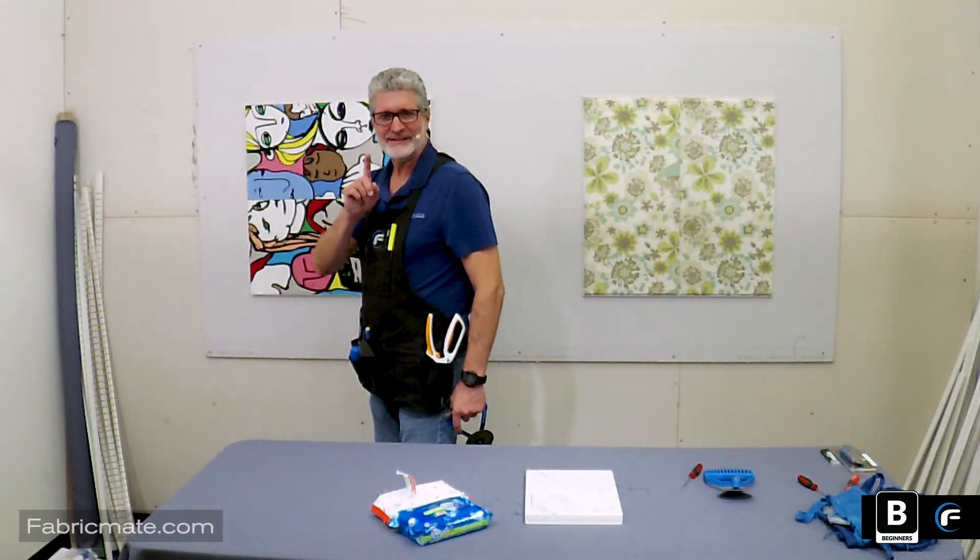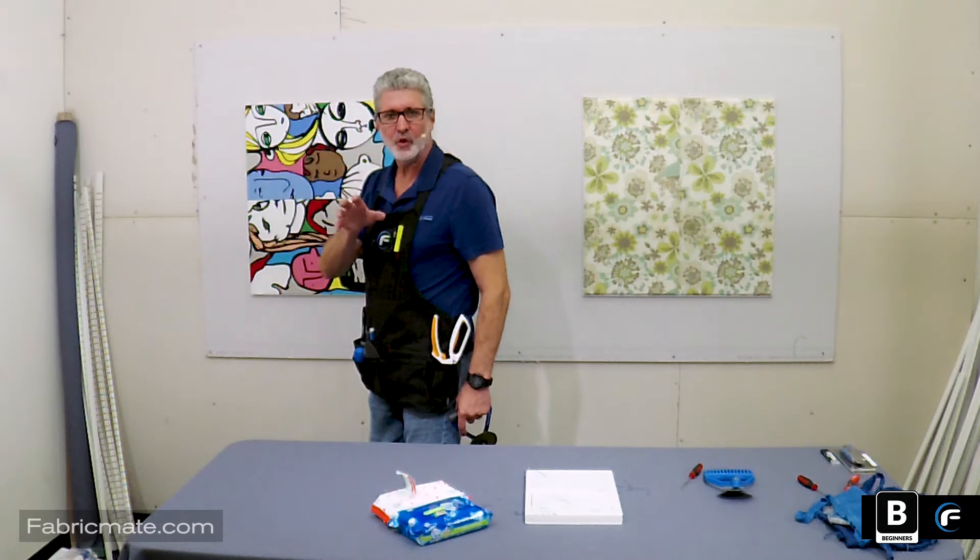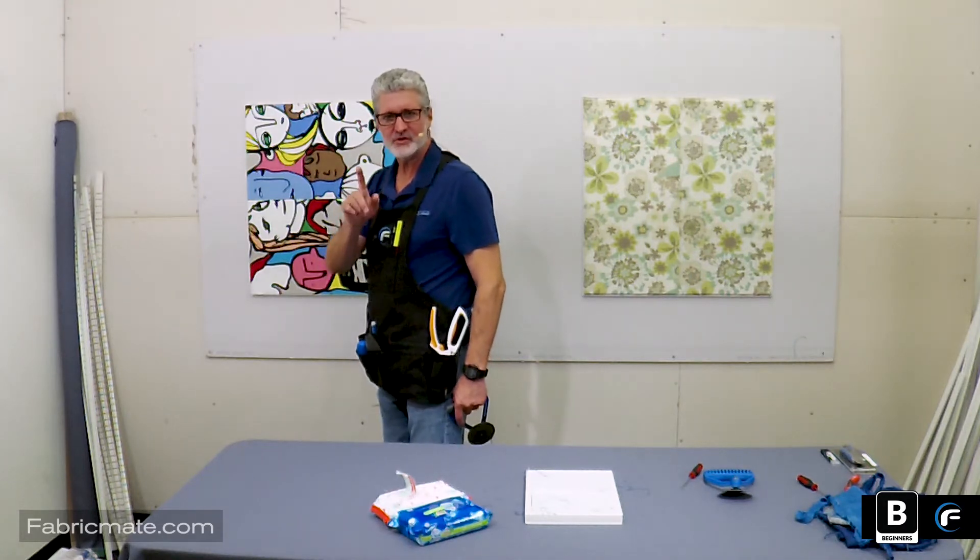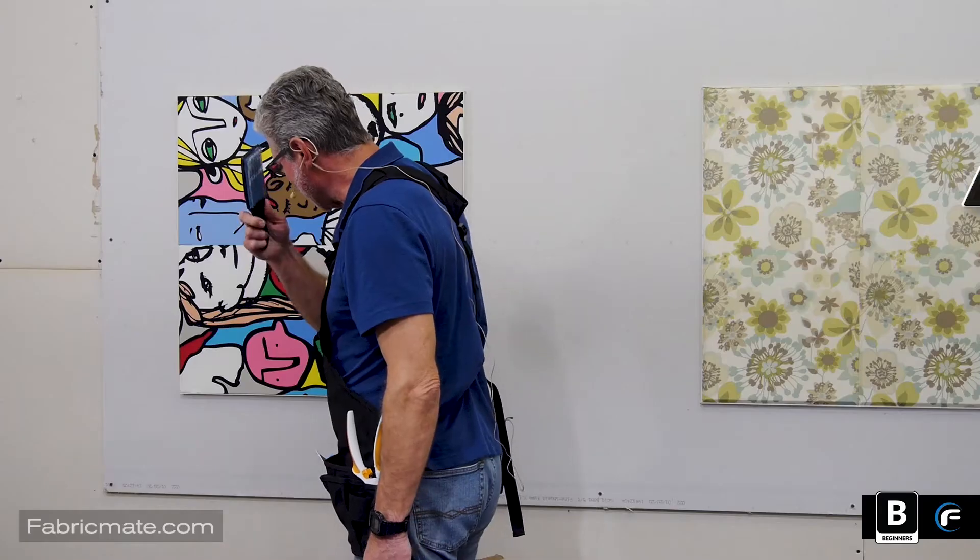Something else that you might come across is a little crinkle or wrinkle or a bulge in the fabric where it doesn't seem to be rolling out. Let me show you another tip and technique using the helping hand.